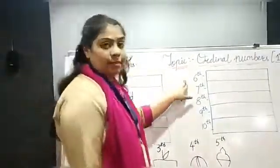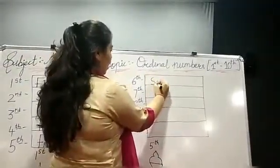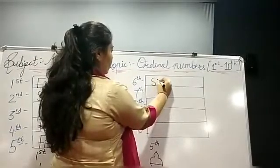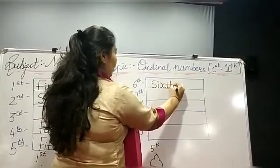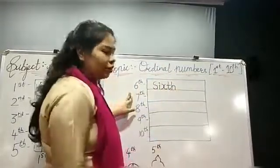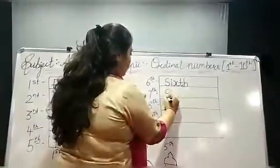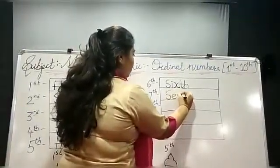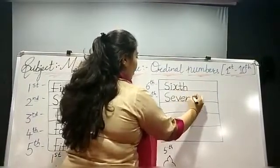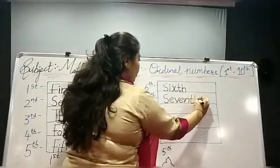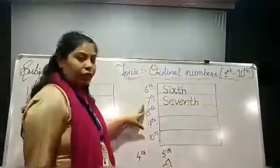Now, 6th. So, S, I, X, T, H — Sixth. T, H. Now, 7th. S, E, V, E, N, T, H — Seventh. T, H.